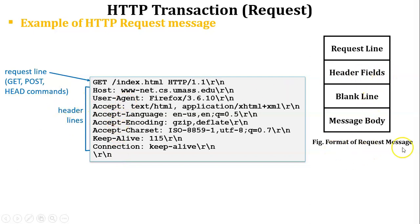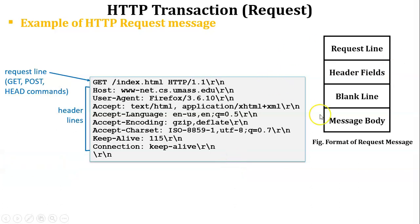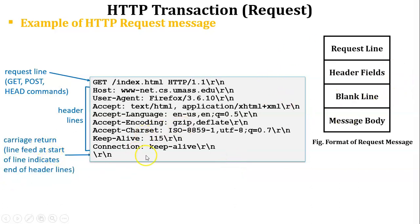All the lines are covered in the header fields. In the format of the request message, after the request line the next field is the header field, and then the blank line — which marks the end of the header field. The message body is not included in this request message; after the header field there is a blank line indicating the end of the header field.